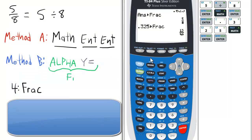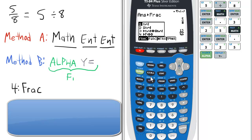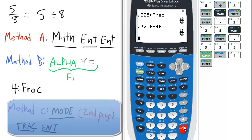Now, method B, this is supposed to be a shortcut, but it's actually longer than method A. You can have your number, let's say .325 again, and then we can press alpha and then y equals for the F1, and then 4 for fraction to decimal and enter. So a little longer than method A.